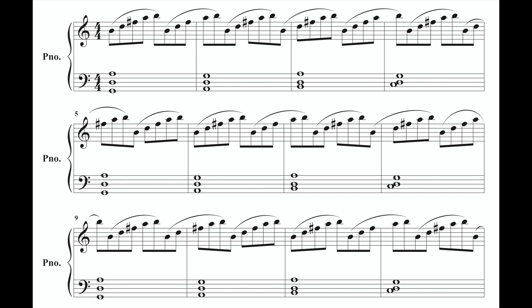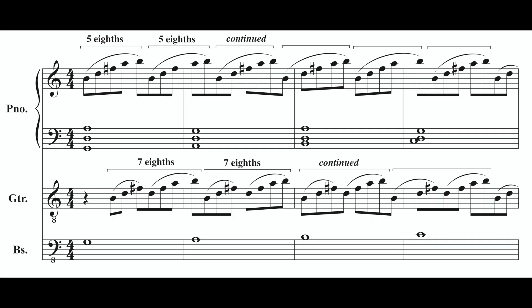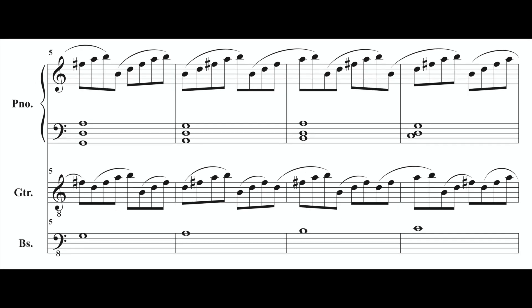The guitar part has him playing pentatonic eighth notes in groups of seven — another prime number. So every seven bars he'll be back at the start of the pattern, and that's happening against the five eighth notes of the piano's right hand and the four bars of the piano's left hand.